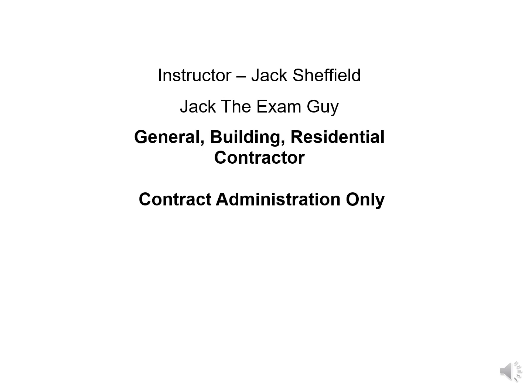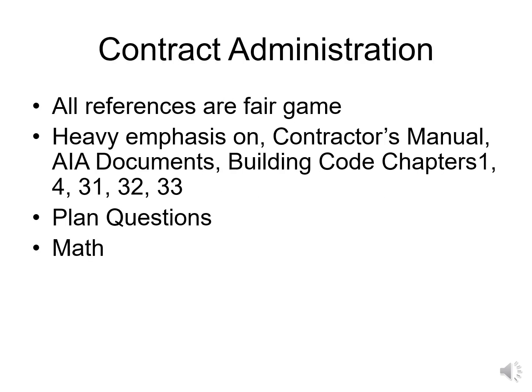The reason it's unusual — on the contract administration exam, all references are fair game, but there is a heavy emphasis on the contractor's manual, the AIA documents, and the building code chapters 1, 4, 31, 32, and 33. So they've got some building code questions, some plan questions, and some contractor math questions in addition to the business questions.